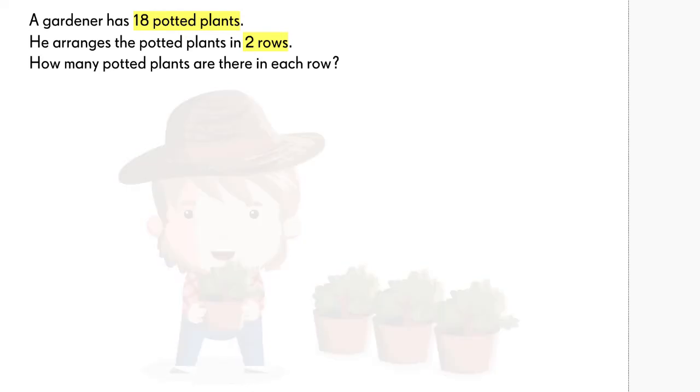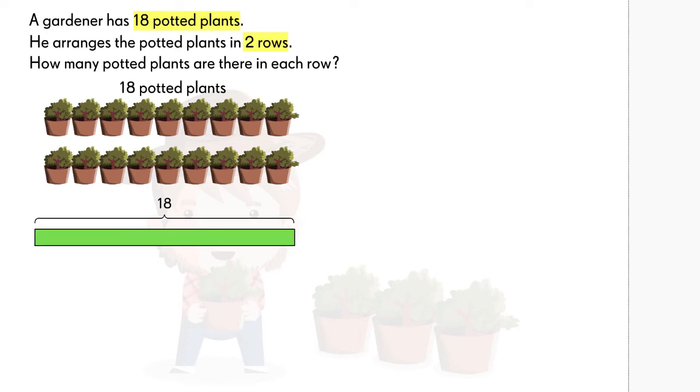There are 18 potted plants all together. We draw a bar to represent the plants.